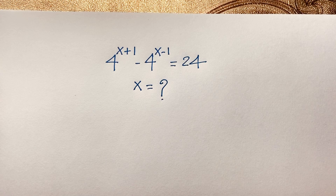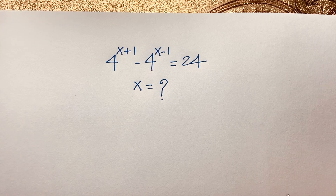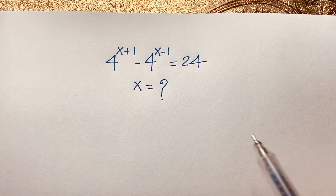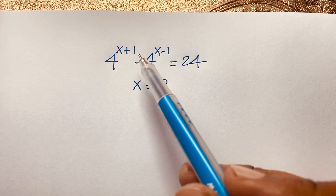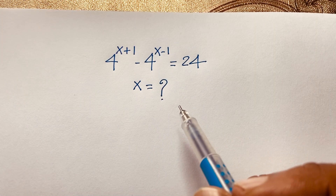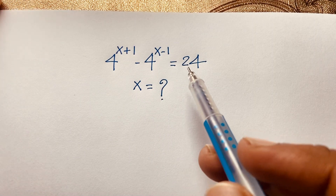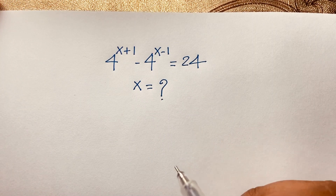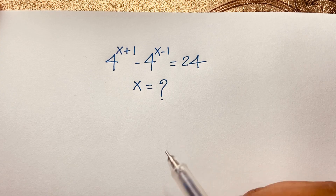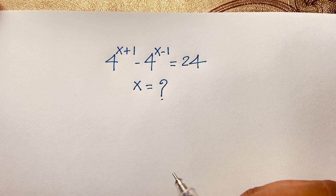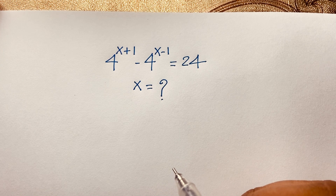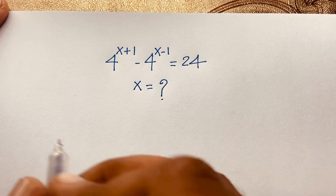In this video we solve a nice exponential math problem: 4 to the power x plus 1, minus 4 to the power x minus 1, is equal to 24. We find out what is the value of x in this exponential math problem.